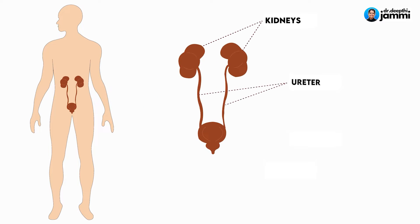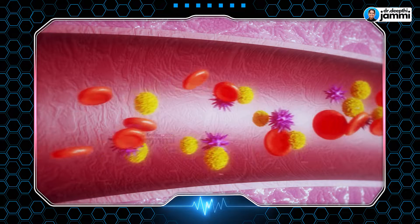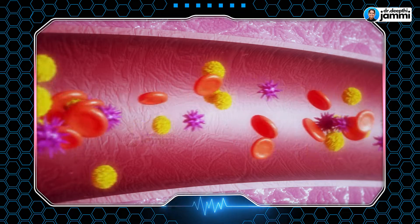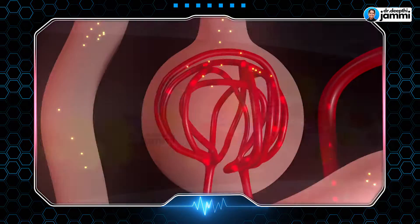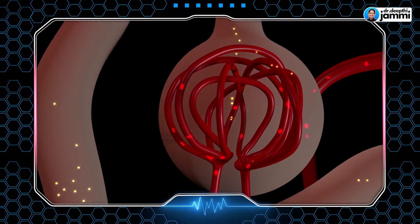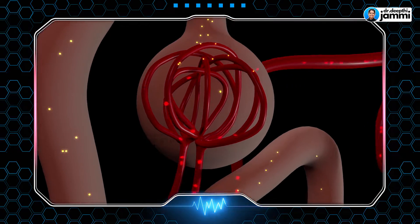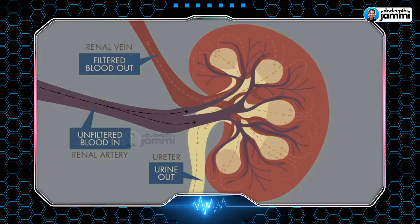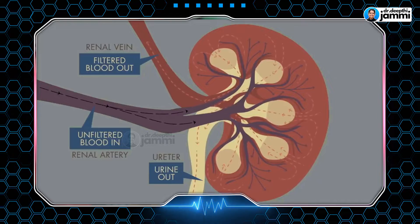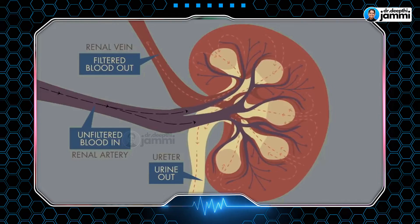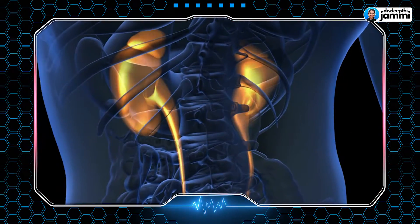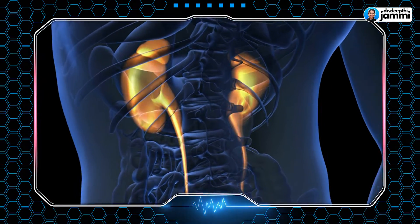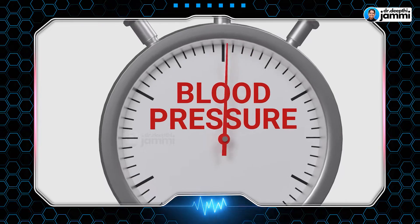Kidneys are the main organs which filter toxins from our bloodstream — eliminating those toxins from the blood. The kidney also plays a major role in regulating blood pressure.